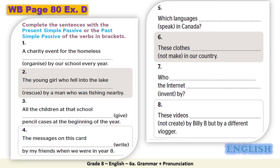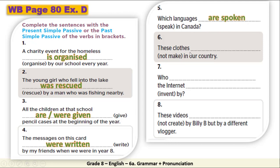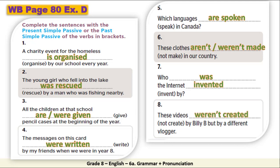Now let's move to exercise D, page 80. Complete the sentences with the present simple passive or the past simple passive of the verbs in brackets. You have 4 minutes. Let's check your answers. 1: 'A charity event for the homeless is organized by our school every year.' 2: 'The young girl who fell into the lake was rescued.' 3: 'All the children at that school are/were given...' 4: 'The messages on this card were written.' 5: 'Which languages are spoken?' 6: 'These clothes aren't/weren't made.' 7: 'Who was the internet invented by?' 8: 'These videos weren't created.'